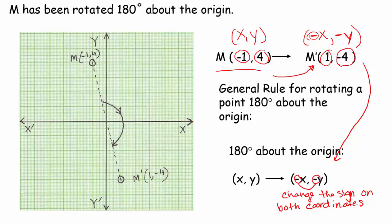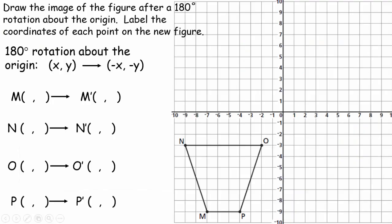Let's go ahead and apply this rule and see how it works with figures. Hopefully you remember this figure, because we've been using the same one. Now we're going to make a 180 degree rotation about the origin. Here's my origin. At 180 degrees, if I looked at point O and drew a straight line, 180 degrees looks like this. Guess which quadrant it's going to be in — if you're just visualizing, you should be thinking to yourself it's going to end up in quadrant 1.